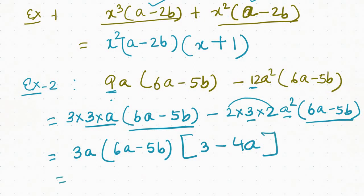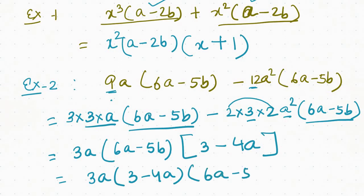So I am going to answer 3a, then 3a minus 4a, roll into 6a minus 5. It is a whole thing — I am going to answer the question.